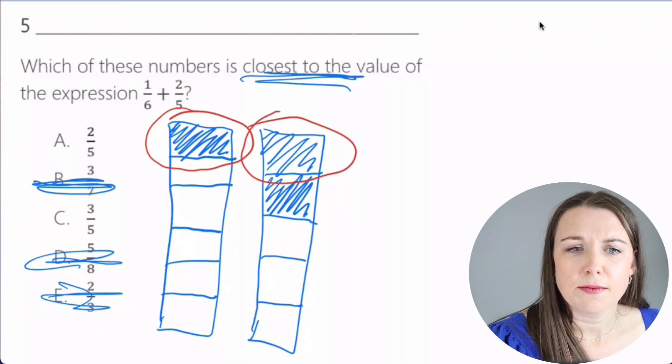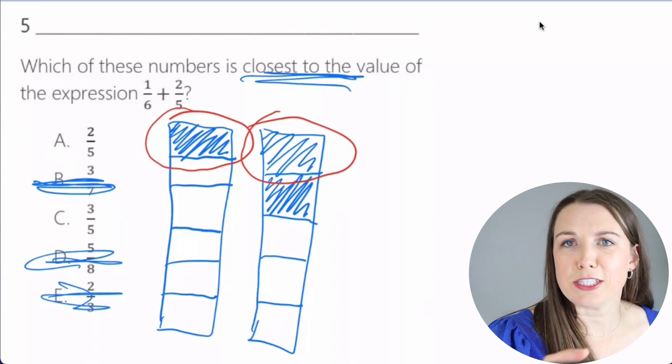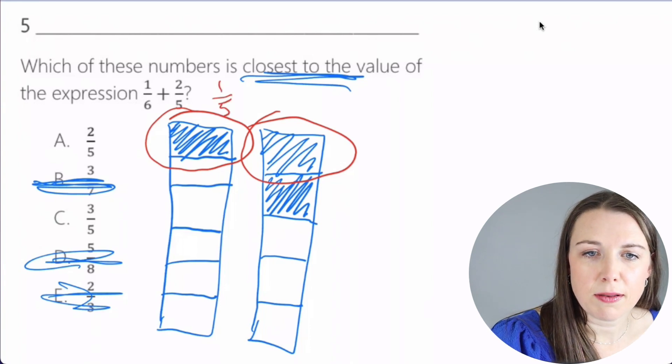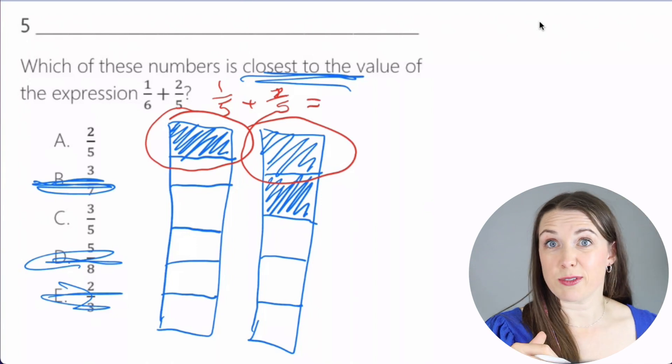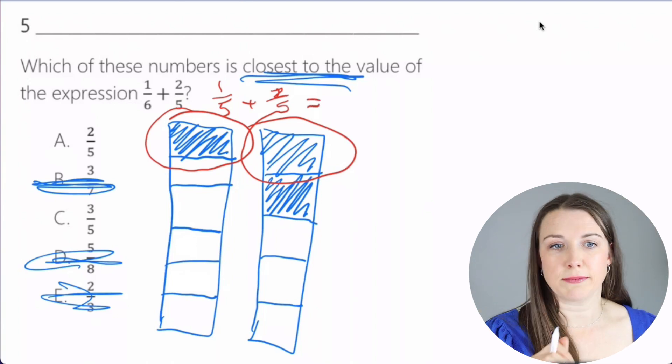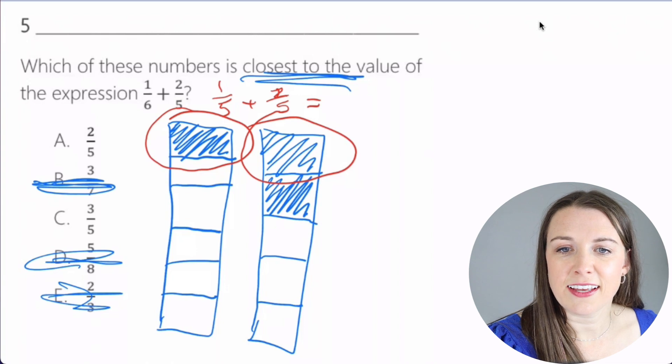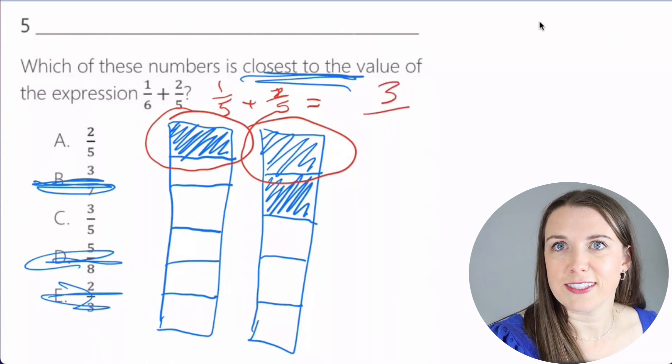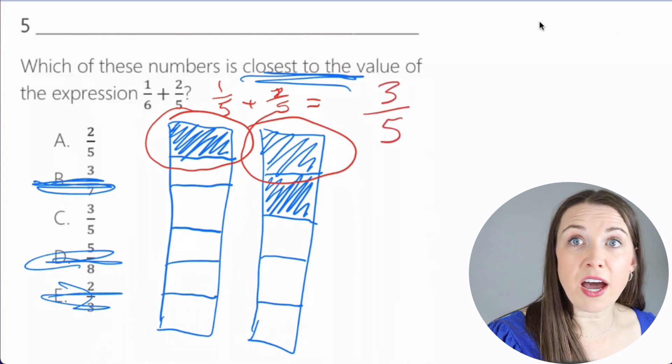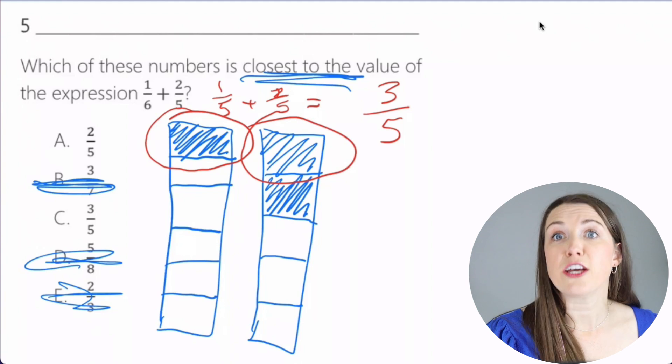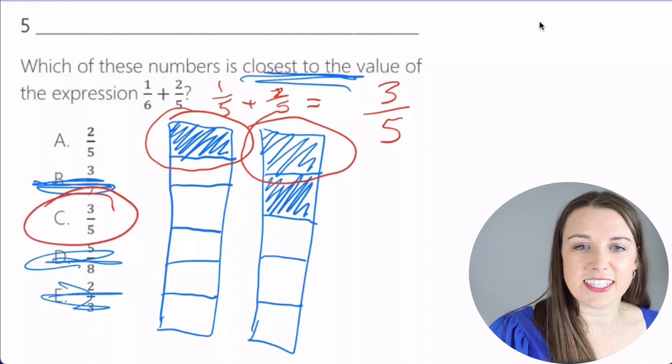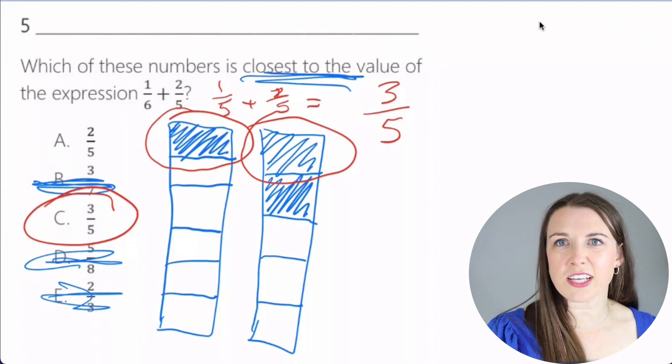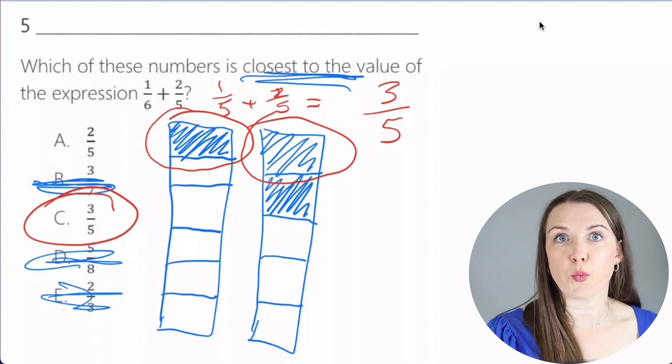So we're just going to say 1/5 + 2/5. And because they both have the same denominator, that 5, we can just add them together. So 1 + 2 is 3. And 5 just stays the same on the bottom. So how much of a candy bar are you getting? 3/5. So C is our answer. And it's just kind of doing a little bit of rounding.